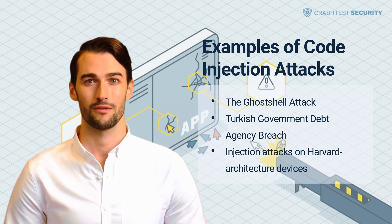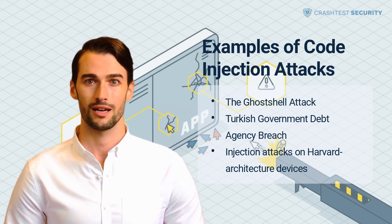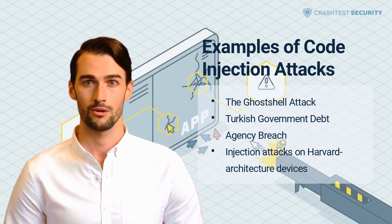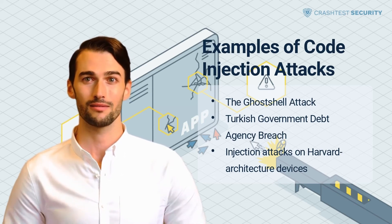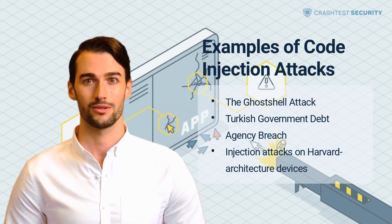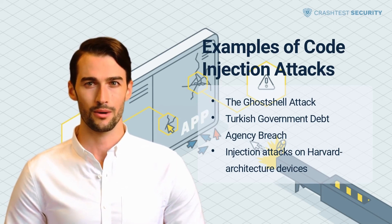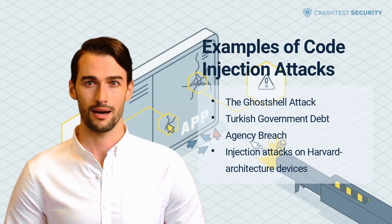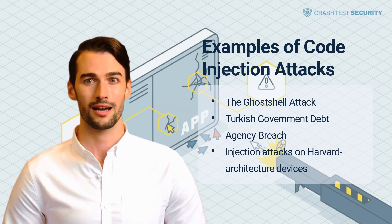Turkish government debt agency breach. Red Hack, a Turkish hacker group, claimed to have penetrated the Istanbul Special Provincial Administration's website, clearing people's debts to utility agencies. They utilized a simple SQL injection script to bypass the website's login page, granting administrator and end-user accounts access.